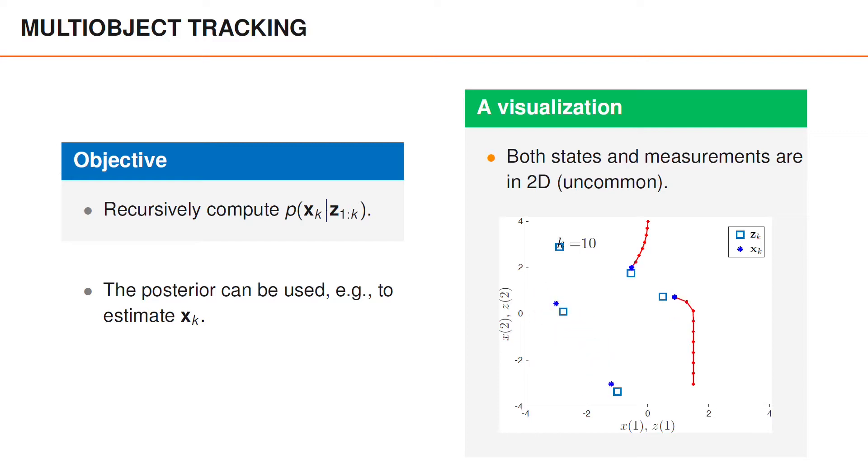Of course, in reality, the objective would be to infer the set of object states from the sequence of measurements, and for a few time steps around k equals 14, we have a challenging problem since all four objects are close to each other. In this example, the objects later disappear, and we are eventually left with a single object.